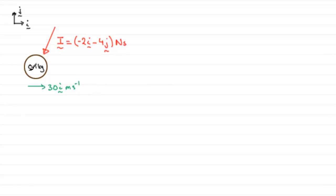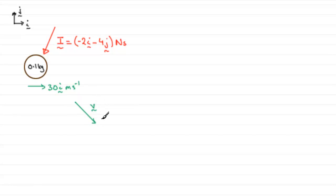So if our ball is moving to the right and it gets hit in this direction, it's going to veer off course, maybe something like this in that direction, v. And it's this final velocity vector that we've got to get.